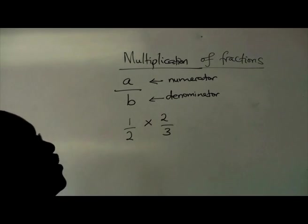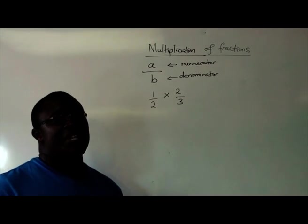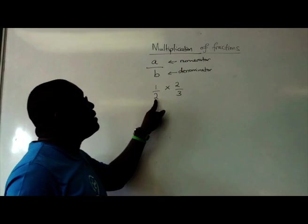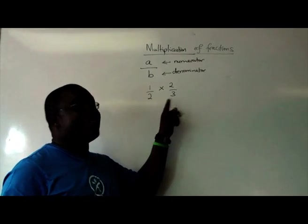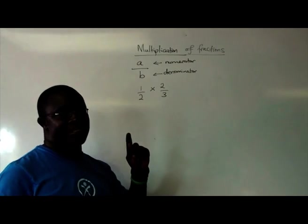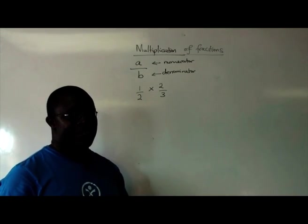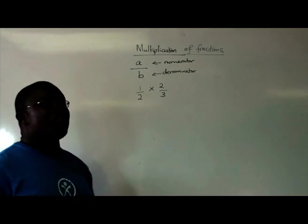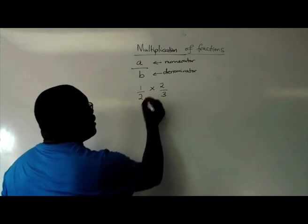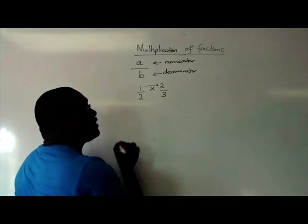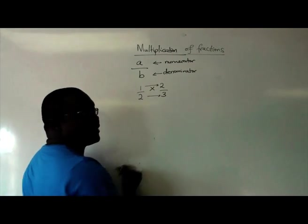If you remember, in addition and subtraction, what you did was that you first made sure the two denominators were the same and then you added the numerators. But now it's different when it comes to multiplication. Because with multiplication, what you're simply going to do is multiply numerator times numerator, denominator times denominator.